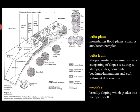In general, sediments in a deltaic environment decrease in grain size offshore. Deltaic environments show the influence of both fluvial and marine processes, resulting in many distinct depositional environments categorized into three: the delta plain, where we have meandering floodplains, swamps, and beach complex; the delta front, which is steeper and unstable because of over-steepening of slopes, leading to slumps, slides, convoluted beddings or laminations, and soft sediment deformation; and the pro-delta, which is a broadly sloping zone that grades into the open shelf.